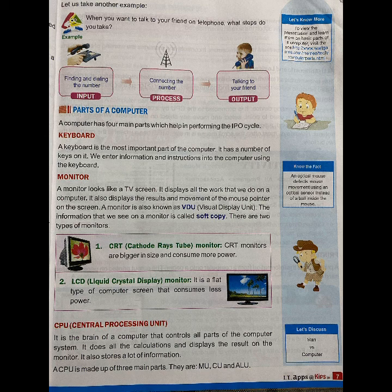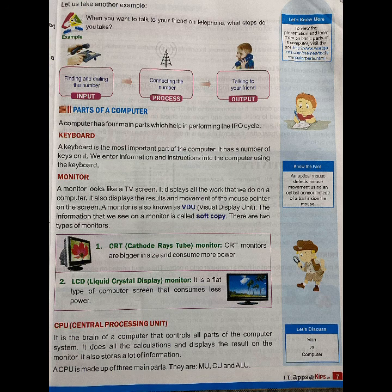LCD stands for Liquid Crystal Display monitor — it is a flat type of computer screen that consumes less power. CPU stands for Central Processing Unit. It is the main brain of a computer that controls all parts of the computer system. It does all the calculations and displays the results on the monitor. It also stores a lot of information.